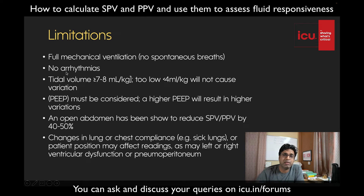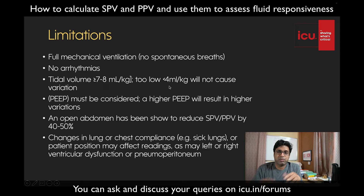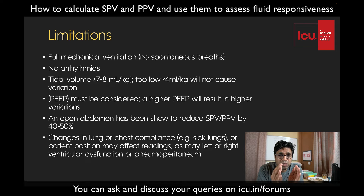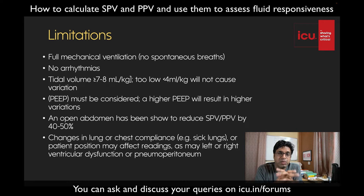Very importantly, there should be no arrhythmia. If a patient is in atrial fibrillation, the graph will vary unpredictably, so patients should not have arrhythmias like AF or SVT. Regarding tidal volume: high tidal volume causes large variation, potentially giving a false positive — making you think the patient is fluid responsive when they are not. Low tidal volume causes minimal variation, potentially giving a false negative.